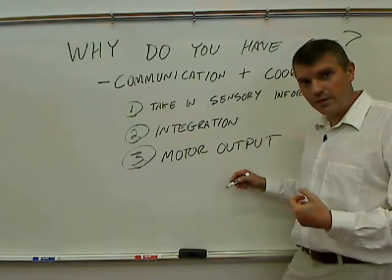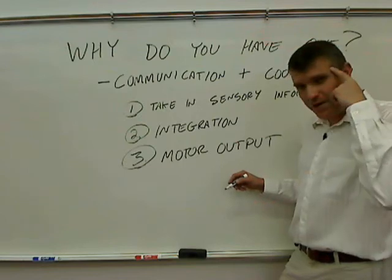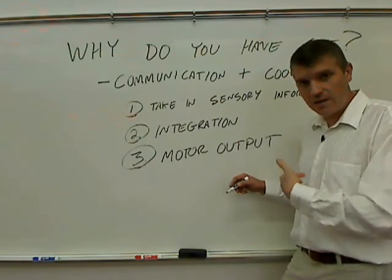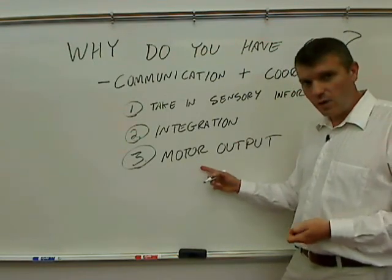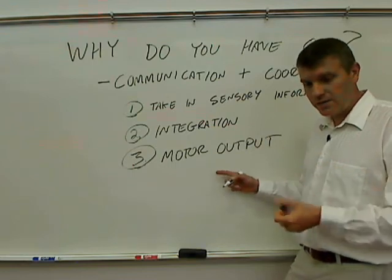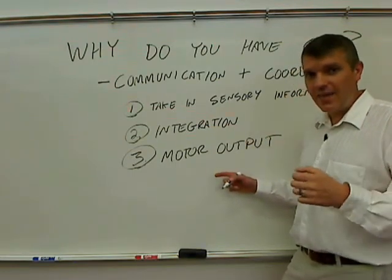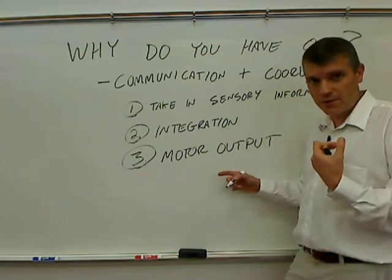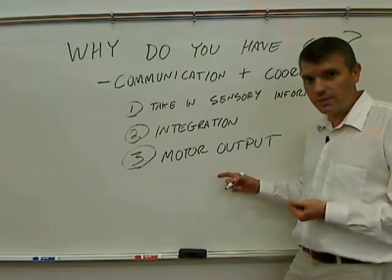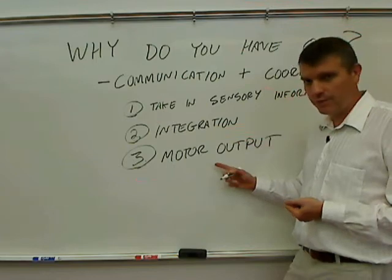And when they detect a drop in that blood pressure, the brain responds to that by telling the heart to beat faster. It sends a motor output to the heart saying you need to increase the rate of heartbeats, and that causes more blood to be pushed up towards your brain and increases your blood pressure again. That's one example of motor output.